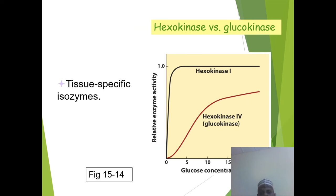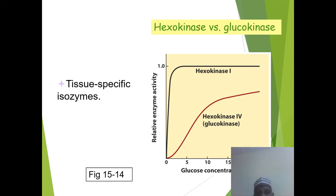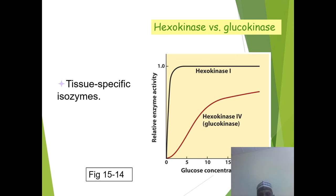This phosphorylation reaction is catalyzed by hexokinase. In liver cells, we have glucokinase, which is much more active there, while hexokinase is mostly active in other cells. These are tissue-specific isoenzymes. As you can see from the graph of relative enzyme activity versus glucose concentration, hexokinase 1 activity is very high at low glucose, while hexokinase 4 (glucokinase) operates at higher glucose concentrations.